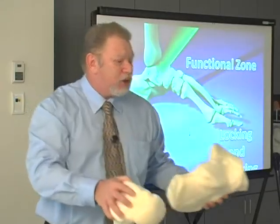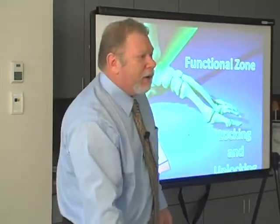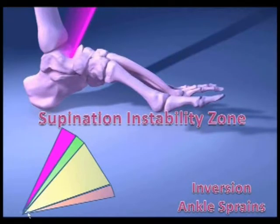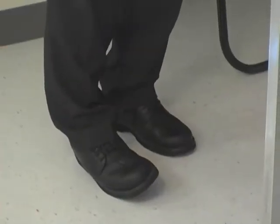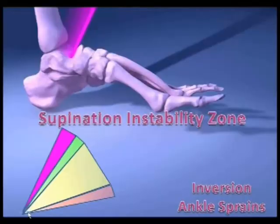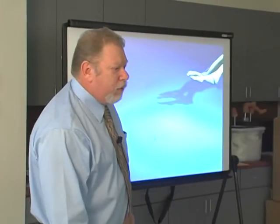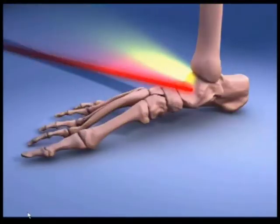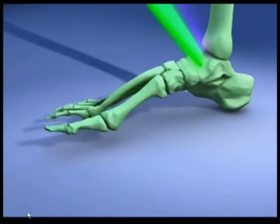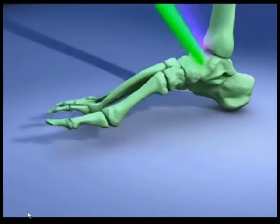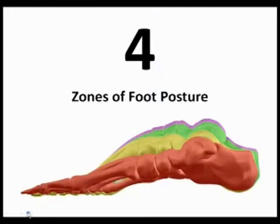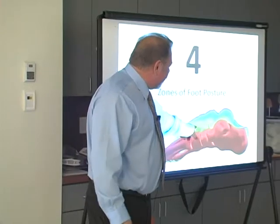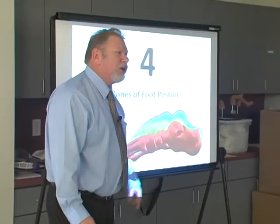Above the functional zone, some people have a position that puts them in so much supination that the downward force moves lateral to the ankle, and you end up with a high incidence of inversion ankle sprains. I would call that the supination instability zone. We go through all of these zones with every step we take: we hit the ground and pass through the supination instability, functional, dysfunctional, and pathologic zones with every single step. Statically, it looks like this: pathologic, dysfunctional, functional, supination instability.